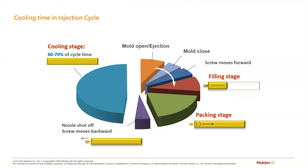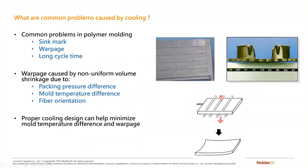Today's focus is on cooling time reduction, which is the main purpose of conformal cooling design. There are common defects that manufacturers and designers face. Cycle time is a crucial factor in manufacturing cost, and conformal cooling can help solve most of these problems, including sink marks, warpage, packing pressure differences, temperature differences, and fiber orientation, by providing uniform temperature throughout the part.